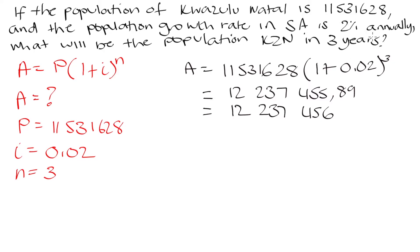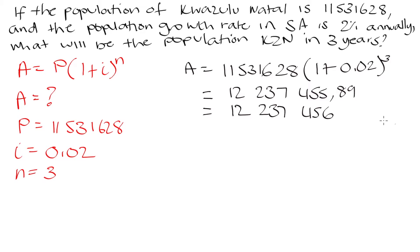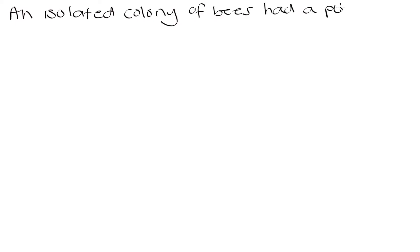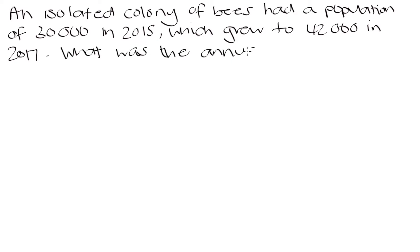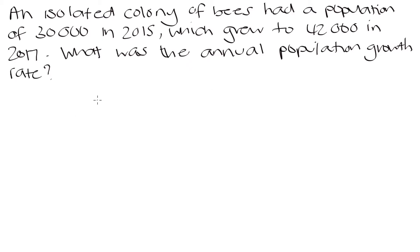Let's do another example. An isolated colony of bees had a population of 30,000 in 2015, which grew to 42,000 in 2017. What was the annual population growth rate? In this question we need to figure out the population growth rate given an initial and final population and a period of time.